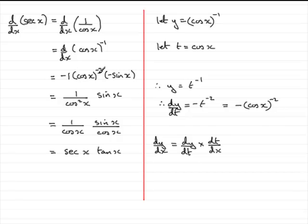That's what we wrote here. Minus 1 if you like, minus cos x to the minus 2. Same as this bit, dy dt. So we've got this part. Let's just put that in. Minus cos x to the power minus 2.